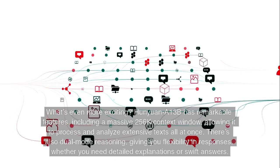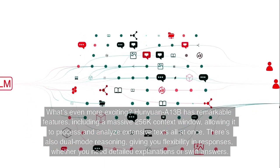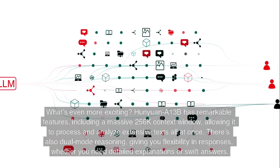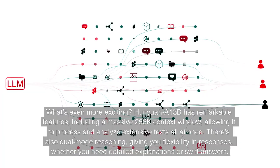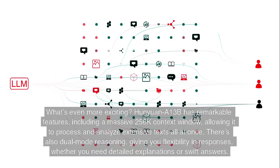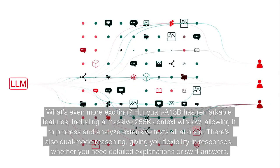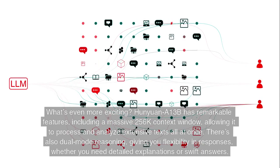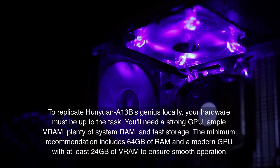What's even more exciting, Hanyuan A13B has remarkable features, including a massive 256K context window, allowing it to process and analyze extensive texts all at once. There's also dual-mode reasoning, giving you flexibility in responses, whether you need detailed explanations or swift answers.